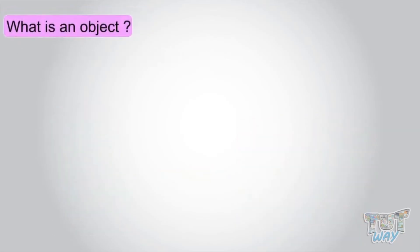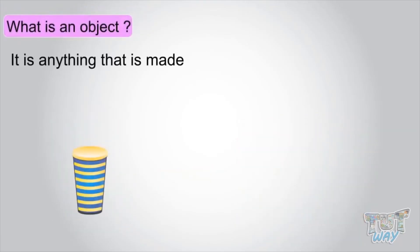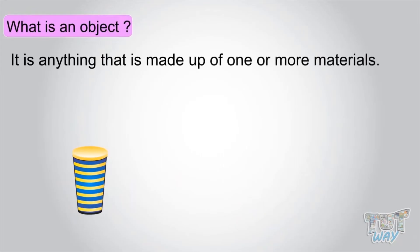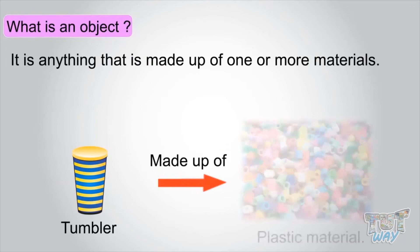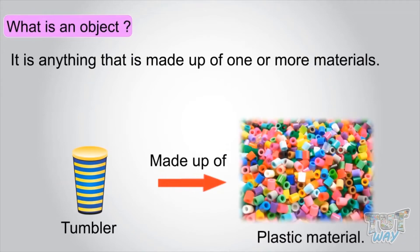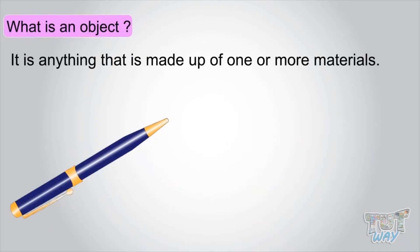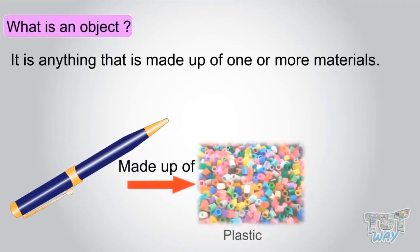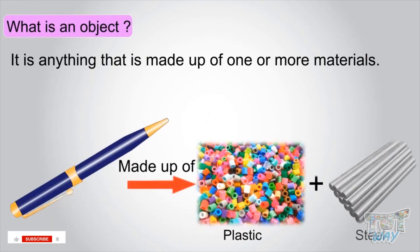So, what is an object? It is anything that is made of one or more materials. This tumbler is an object made of plastic. This pen is an object made up of two types of materials: plastic and steel.